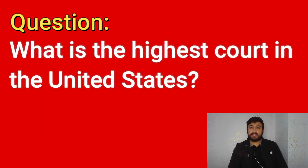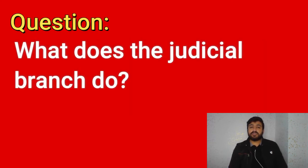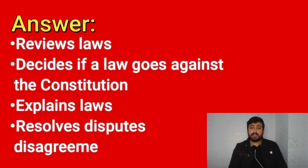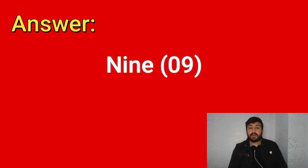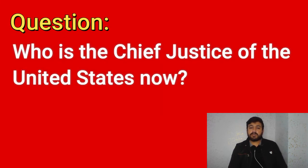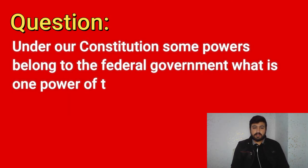What is the highest court in the United States? The Supreme Court. What does the judicial branch do? It reviews laws, explains laws, resolves disputes, and decides if a law goes against the Constitution. How many justices are on the Supreme Court? Nine. Who is the chief justice of the United States? John Roberts, John G. Roberts Jr.